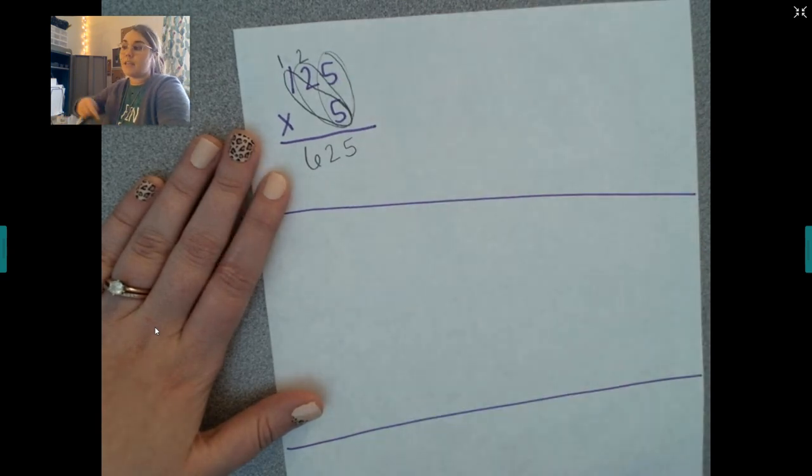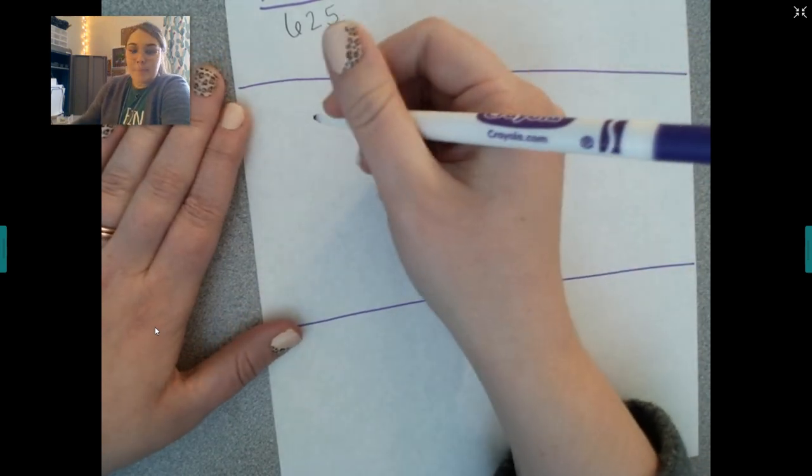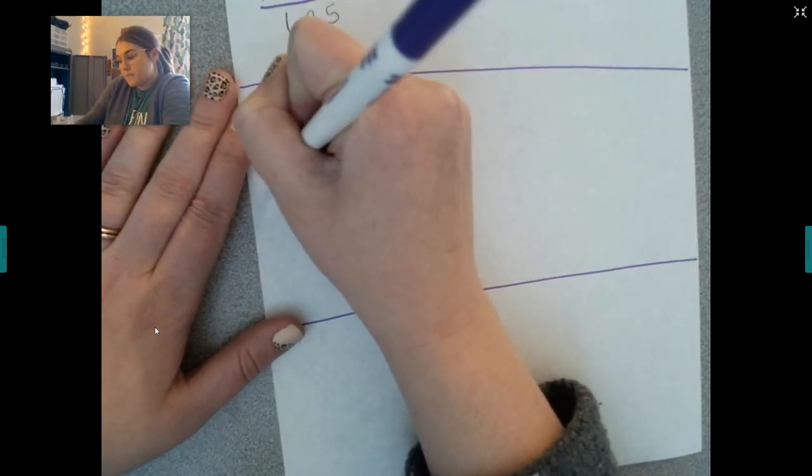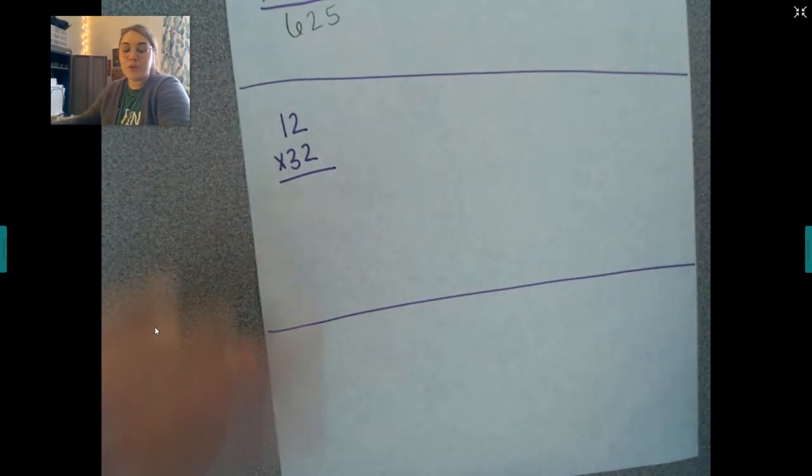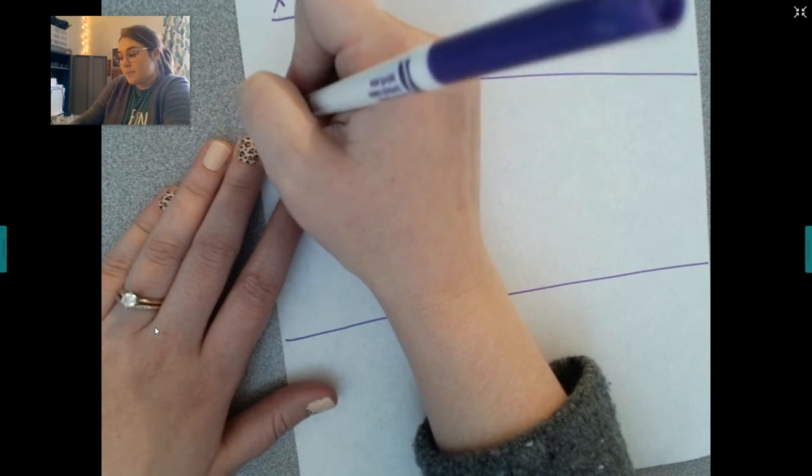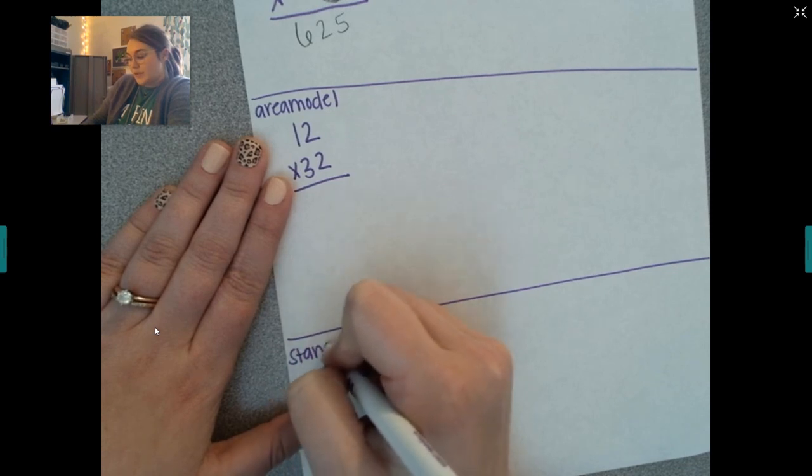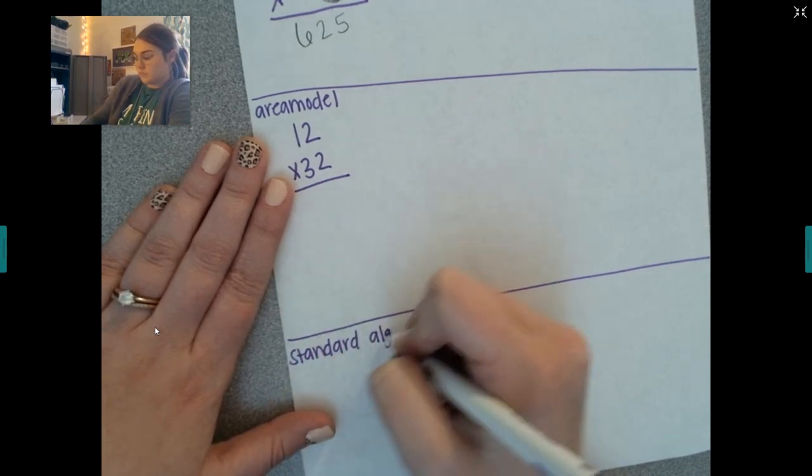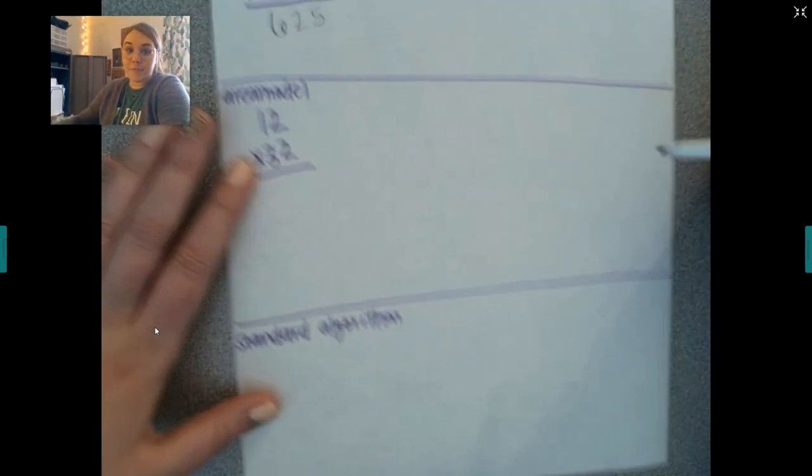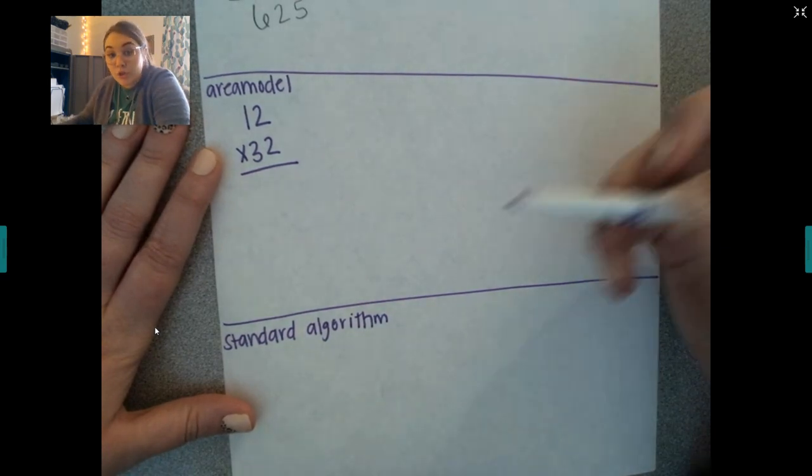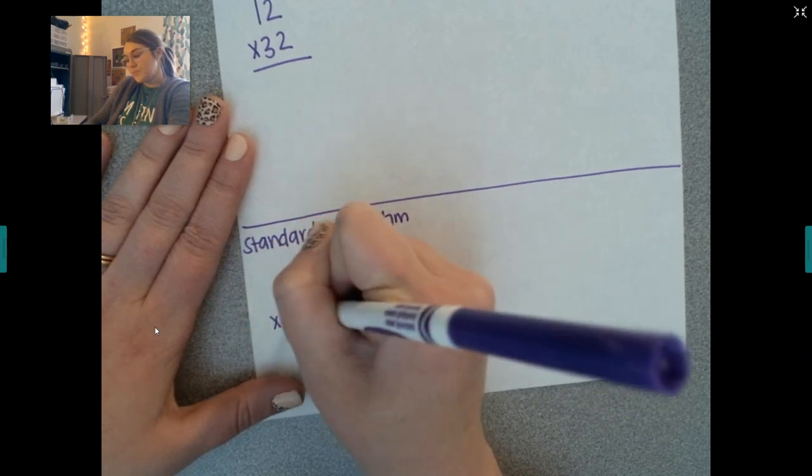Now those are typically the ones that y'all are pretty good at because there's only one number. What happens when they give you two? Now there are two ways you can do it. You can use the area model or you can use the standard algorithm. Now I'm going to show you the area model first and so I want everybody to practice this with me. You can choose whichever one you like to use but I'm going to show you both with the same problem.